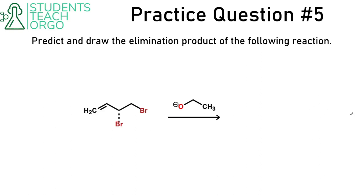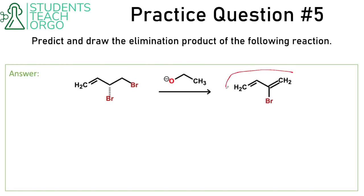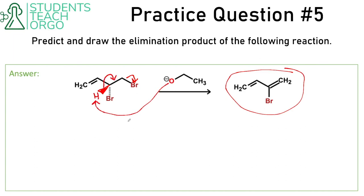Here is the next practice question: predict and draw the elimination product of the following reaction. This is what we'd expect to get as a product, which means it would be this bromine right here that gets kicked out. The reason is that we have a hydrogen — a proton that is wedged — and because this proton is in that allylic position, it is going to be especially acidic. So the base would want to come over and grab that proton, having the electrons in that bond come over to make a double bond, pushing out that bromine, giving us this product.